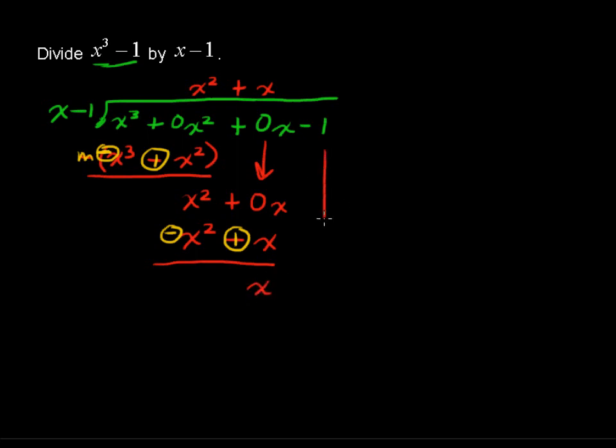Drop down the next term or digit if you're doing long division with numbers. And then what do you multiply by x to get x? Well, in this case it is just 1.